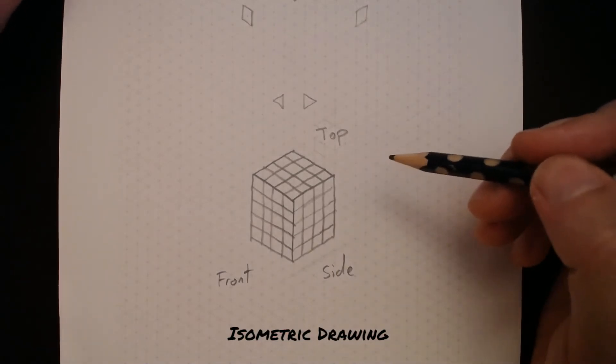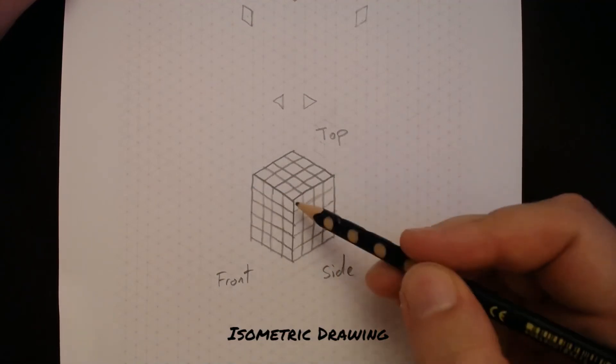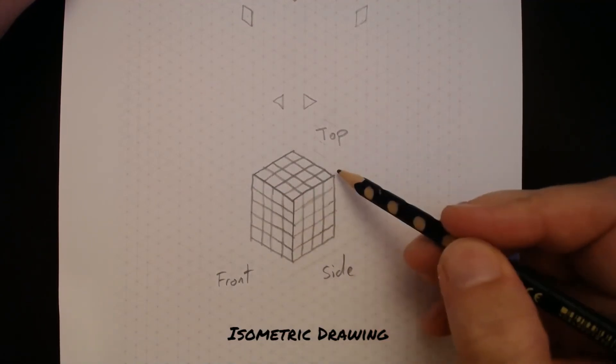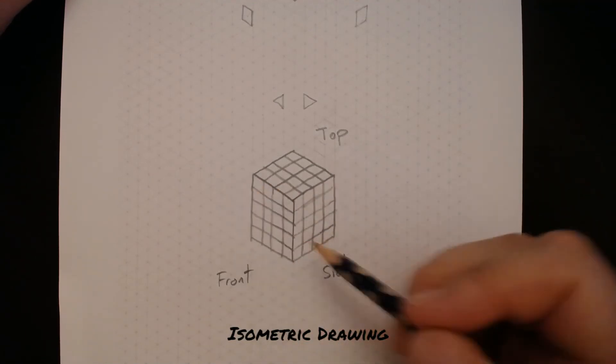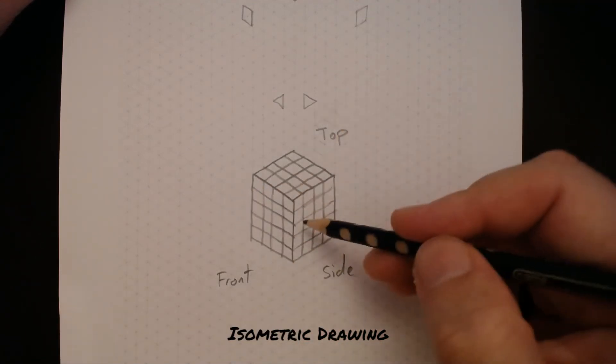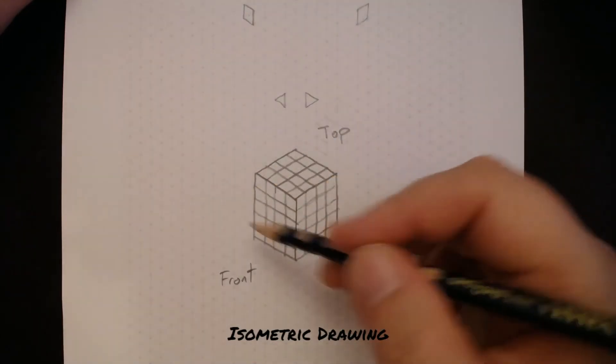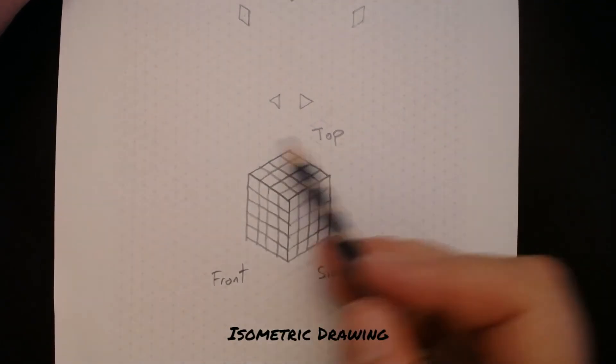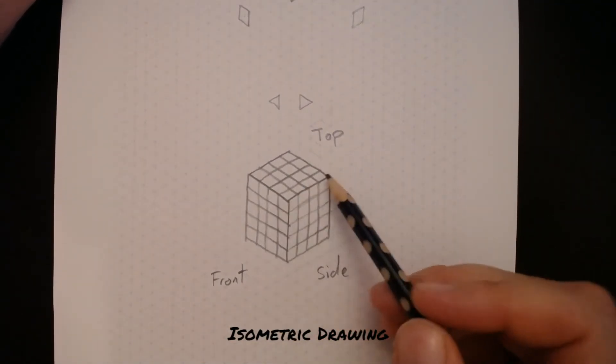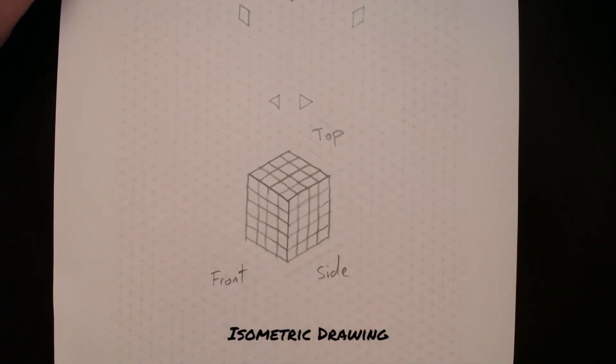So what I'd like you to go ahead and do is draw this Y shape that I drew. Mine is one, two, three, four lengths in each direction. Then draw in this square grid, draw in this square grid, and draw in this square grid. I'd like you to create this cube, which is four by four, and label it top, side, and front. And I'll see you back here in just a minute for the next video.